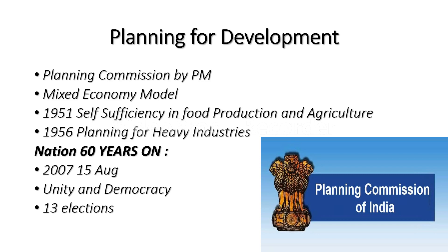In 1951, the first Five-Year Plan was set up, with the main objective of self-sufficiency in food production and agriculture. In 1956, the second Five-Year Plan was formulated, with its focus on the development of heavy industries such as steel and on the building of dams.